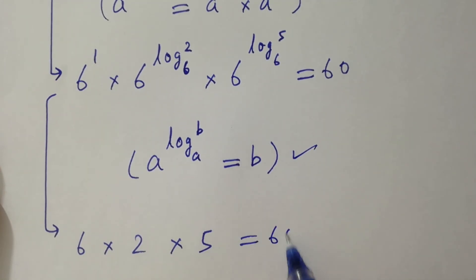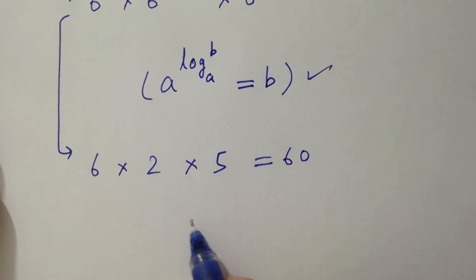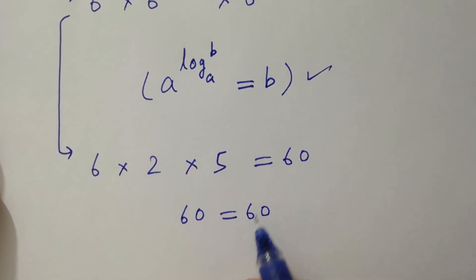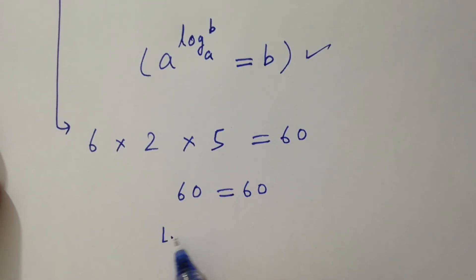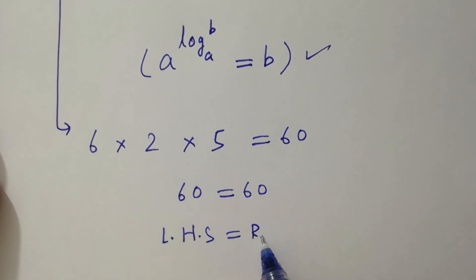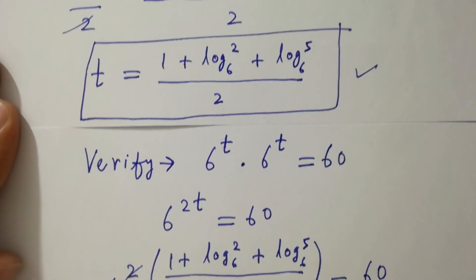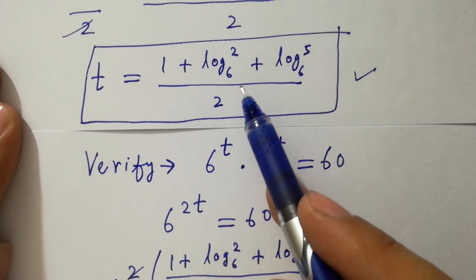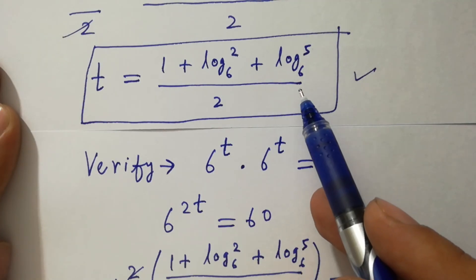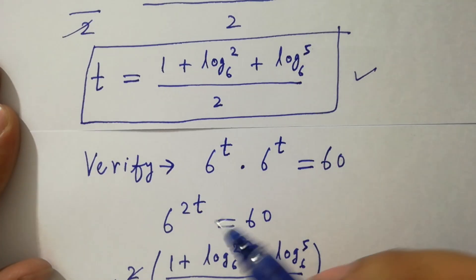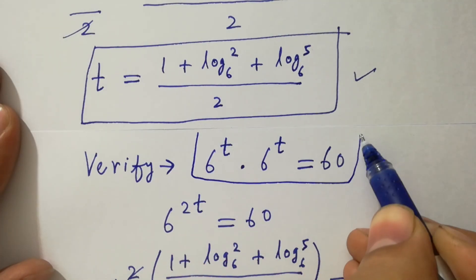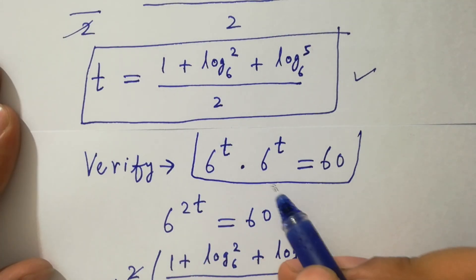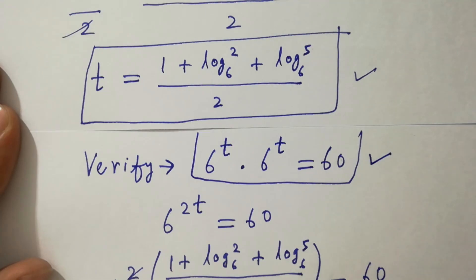6 times 2 is 12, times 5 is 60. So 60 equals 60. Left hand side equals right hand side, which shows that t equals 1 plus log 2 to the base 6 plus log 5 to the base 6 over 2 satisfies the equation 6 to the power t times 6 to the power t equals 60. Thanks for watching this video, please subscribe to the channel to get notifications of new videos.